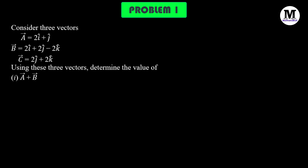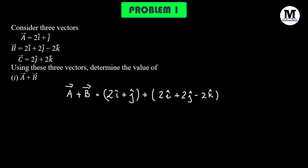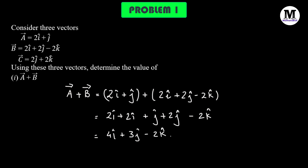In this particular problem, we have three vectors: A vector, B vector, and C vector. We need to determine the value of vector A added to vector B. For this, we are going to add the components along each particular direction. For instance, 2i cap will get added to 2i cap, j cap will get added to 2j cap, and since we have only a single negative 2k cap, that will remain as it is. Finally, we should get 4i cap plus 3j cap minus 2k cap.